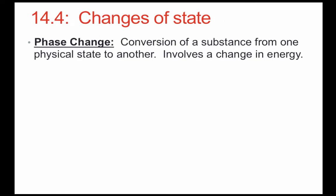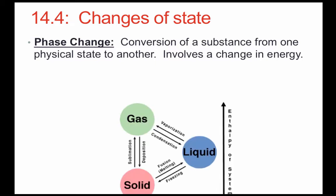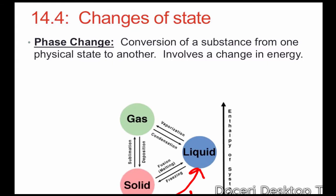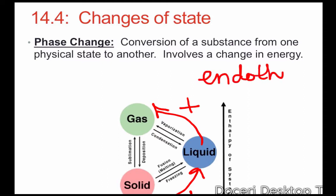Let's start with a quick refresher about changes of state, or phase changes. Phase changes are the conversion of a substance from one physical state to another, and they involve a change in energy. For instance, if we want to melt a solid and convert it into a liquid, we need to add energy. Likewise, if we want to vaporize a liquid into a gas, we have to add energy. These are endothermic processes, because energy is entering the system.